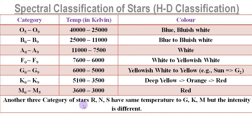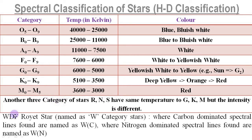Another three category stars — R, N, S — have temperature similar to G, K, M, but the intensity of these category stars is different from G, K, M category stars, so they are categorized differently. After 1930, Wolf-Rayet stars were named as W category stars, which are not part of the HD classification. Among these, stars where carbon-dominated spectral lines are found are named WC, and where nitrogen-dominated spectral lines are found are named WN.